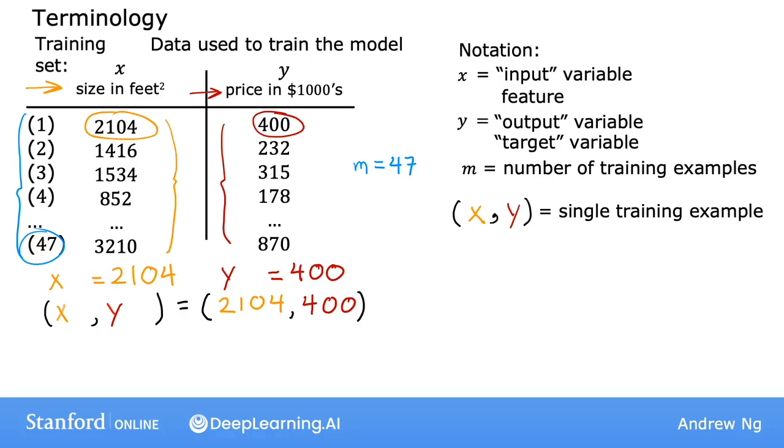So to refer to a specific training example, this will correspond to a specific row in this table on the left. I'm going to use the notation x superscript in parentheses i comma y superscript in parentheses i. This superscript tells us that this is the i-th training example, such as the first, second, or third up to the 47th training example. i here refers to a specific row in the table. So for instance, here is the first example when i equals 1 in the training set. And so x superscript 1 is equal to 2,104, and y superscript 1 is equal to 400.